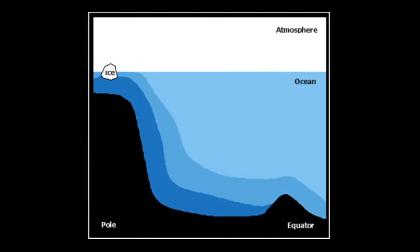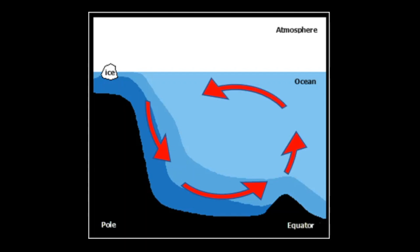Water in the oceans moves in patterns that we call currents. Winds drive the ocean currents in the upper 100 metres of the ocean's surface. However, ocean currents also flow thousands of metres below the surface. These deep ocean currents are driven by differences in the water's density, which is controlled by temperature — thermo — and salinity — haline. So this process is known as thermohaline circulation.